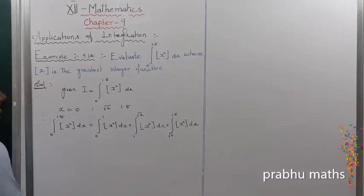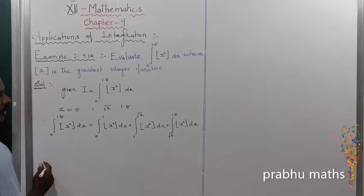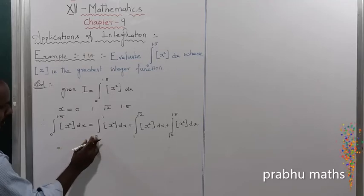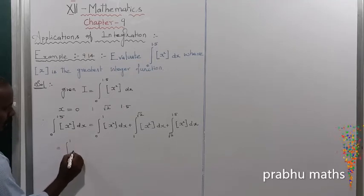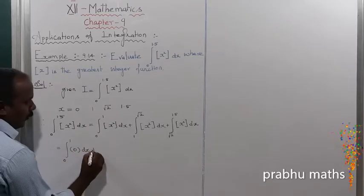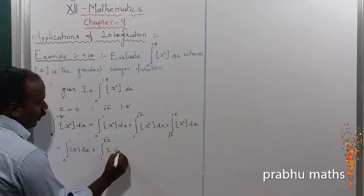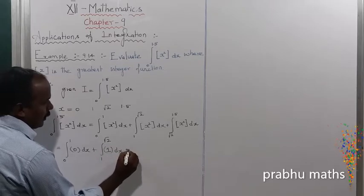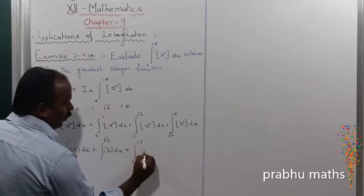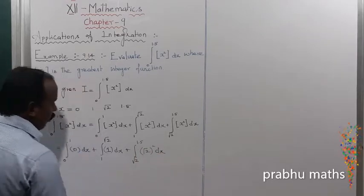For all the integral values, the greatest integer function: on [0,1] it equals 0, on [1, root 2] it equals 1, and on [root 2, 1.5] it equals 2. So that gives us: the integral from 0 to 1 of 0 dx, plus the integral from 1 to root 2 of 1 dx, plus the integral from root 2 to 1.5 of 2 dx — since root 2 squared equals 2.